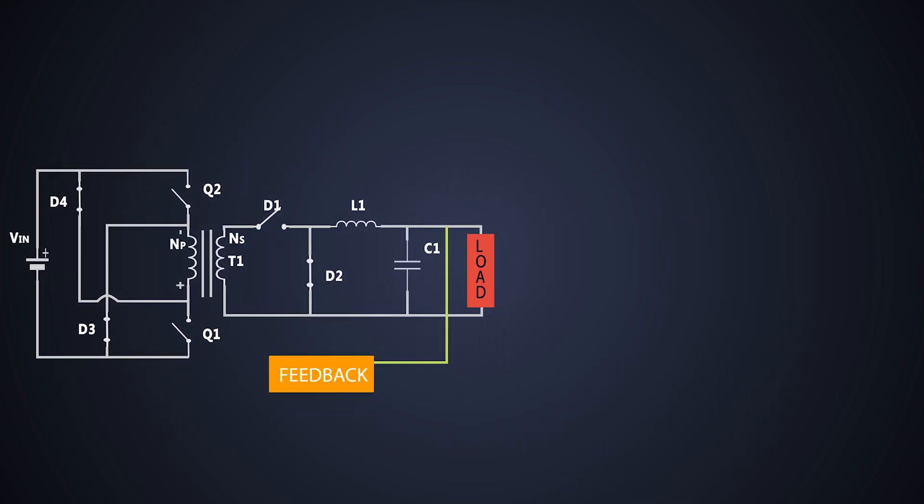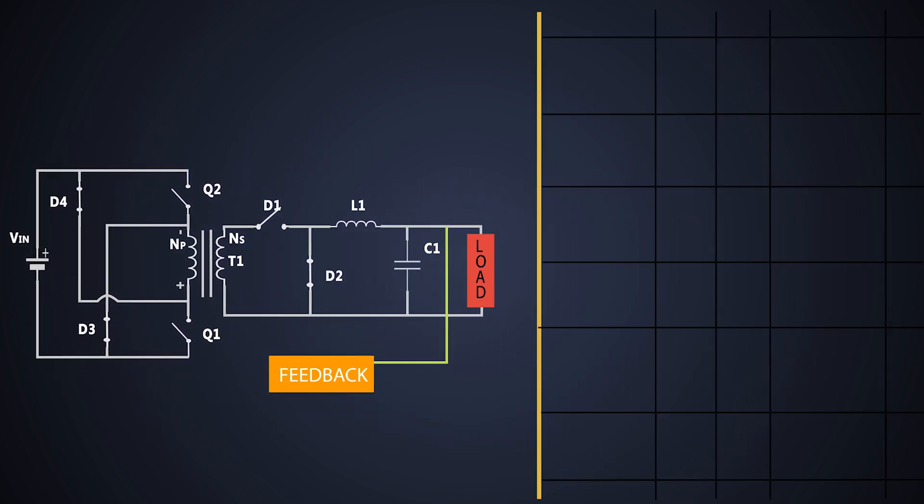Let's see the waveform of this converter. This is the PWM given to the gates of both MOSFETs. So when the gate pulse is high, the MOSFET turns ON and the voltage across both MOSFETs is zero, and current starts rising.